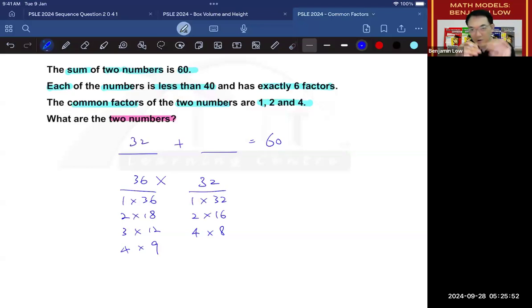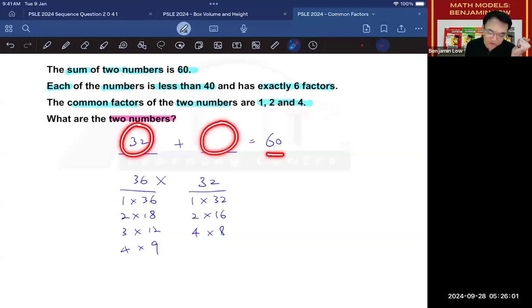But in order to confirm this, what you need to do next is ask yourself, what about this number? Well, we know that 32 plus this number will give me 60. So what is that number? Obviously, you need to take 60 minus 32, and you will get 28.